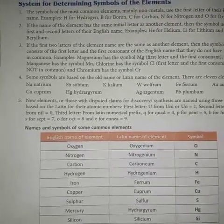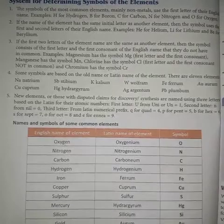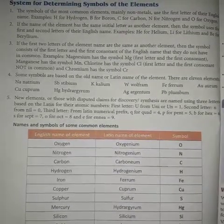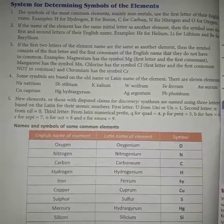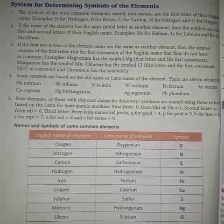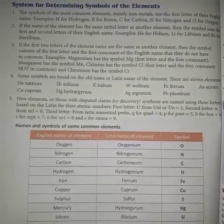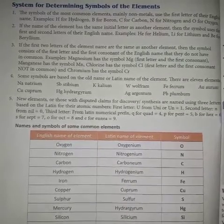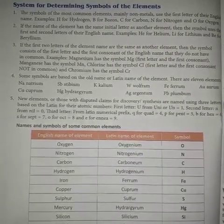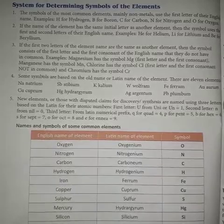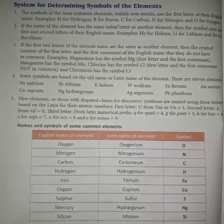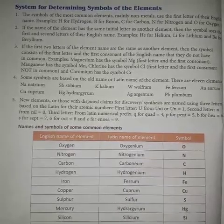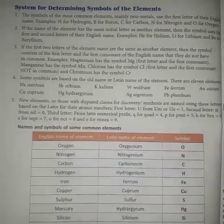If the name of the element has the same initial letter as another element, then the symbol uses the first and second letter of their English name. For example, He for helium, Li for lithium, and Be for beryllium.